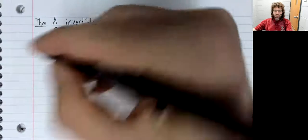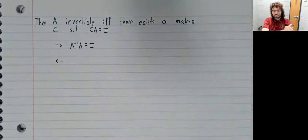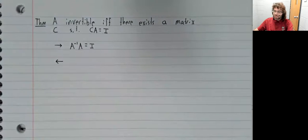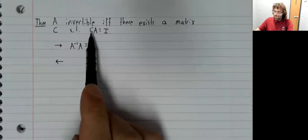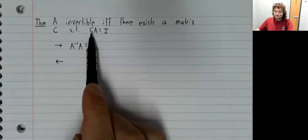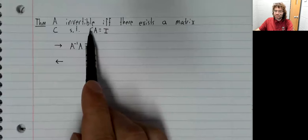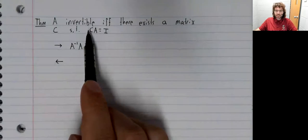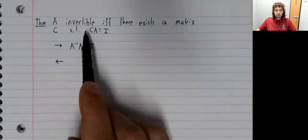Going the other way is surprisingly tricky. In particular, the obvious assumption would be that if this matrix exists, C is A inverse, but it is not easy to prove that. So we're going to take another route.